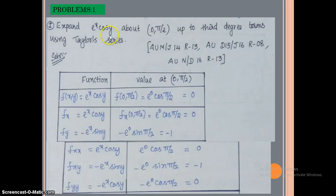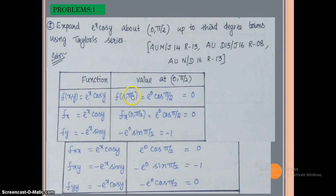First, write f(x,y) = e^x·cos y. The given point is a = 0, b = π/2. So f(0, π/2) = e⁰·cos(π/2) = 1·0 = 0.